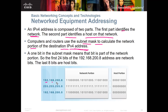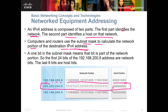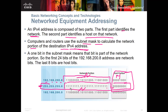It reads 192.168.200.8 in binary, and then it says, what's my subnet mask? If you notice, it's got all ones in the subnet mask. The networking device starts reading across in binary — 11111 — all the way until it gets to a zero. All of those previous bits are the network portion. Everything to the right of the last one is the host portion. The subnet mask determines where the network portion ends and the host portion begins.